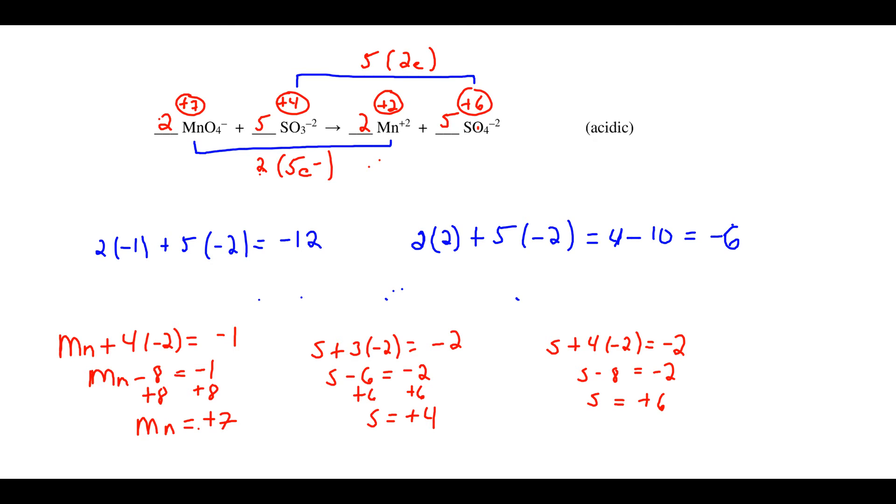If we look at the charges, we see on the reactant side we have a net charge of minus twelve, product side minus six. So we look at our conditions. The conditions tell us that we have acidic solution. So to balance the charge we'll be adding H pluses, and in order to balance the charge we'll have to add six H pluses over here to the reactant side so that now each side has a net charge of minus six.